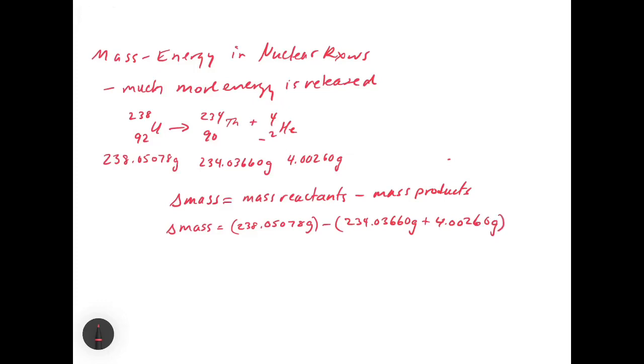Now, if we have conservation of mass, we should get an answer of zero, but it turns out that we get a very, very small difference, and the delta mass, in this case, is going to equal 0.01158 grams.